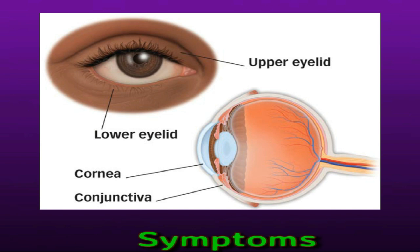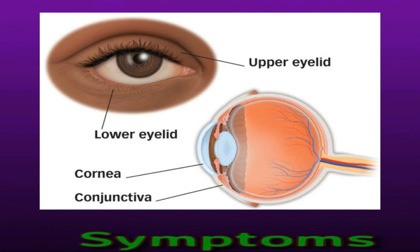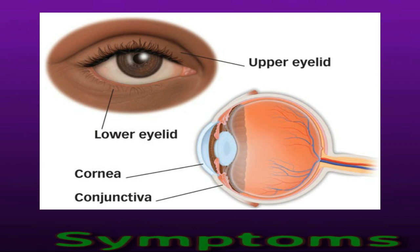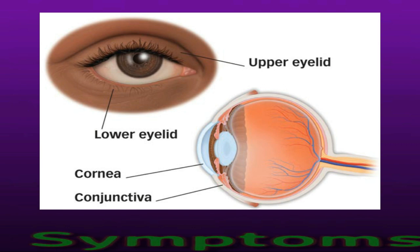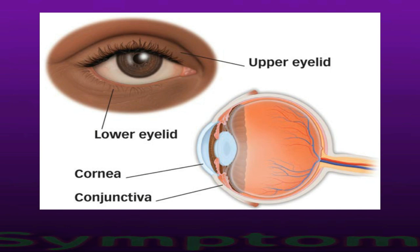The symptoms of a herpes simplex virus infection affecting the eye may be very similar to those of the varicella-zoster virus, which causes chickenpox. However, a varicella-zoster infection is more likely to result in a rash with a distinctive pattern that occurs in only one eye. Another condition that can have similar symptoms is pink eye, which is also known as conjunctivitis.